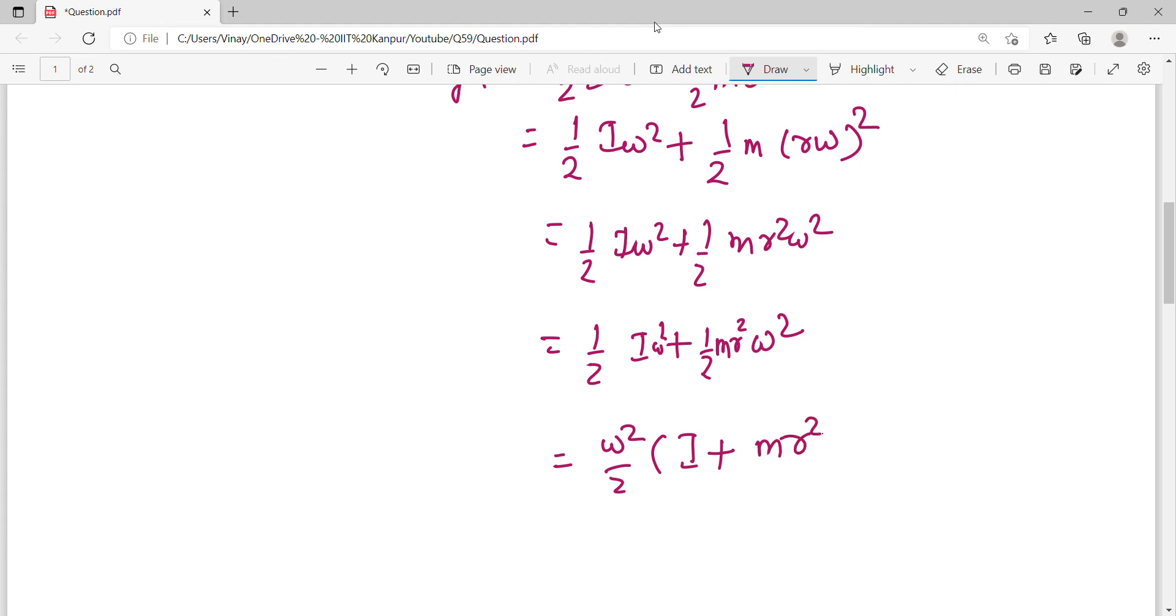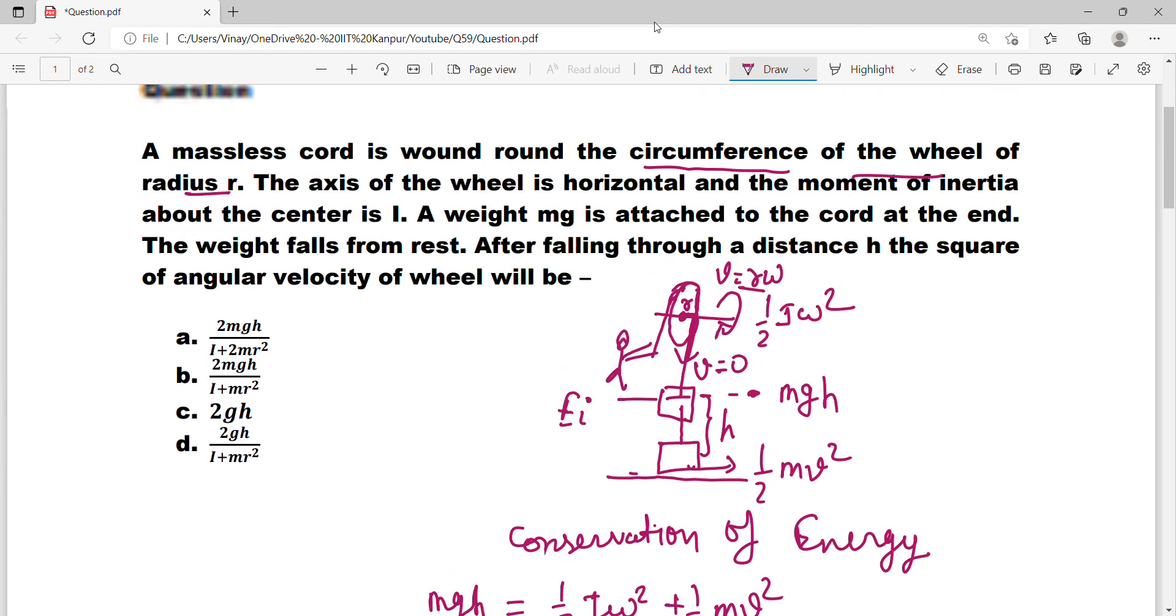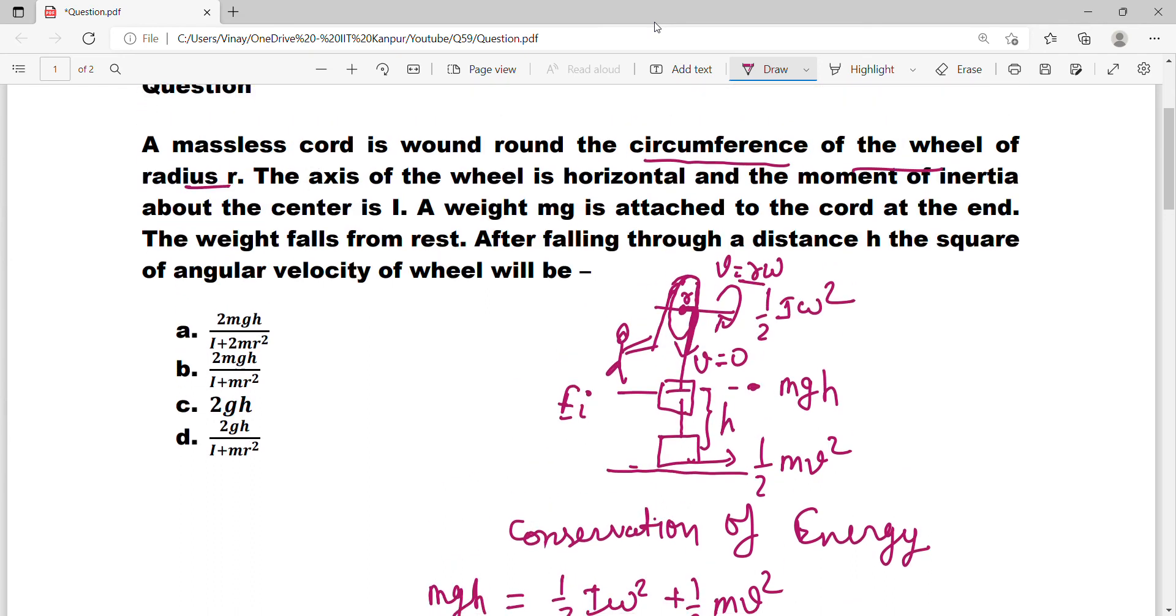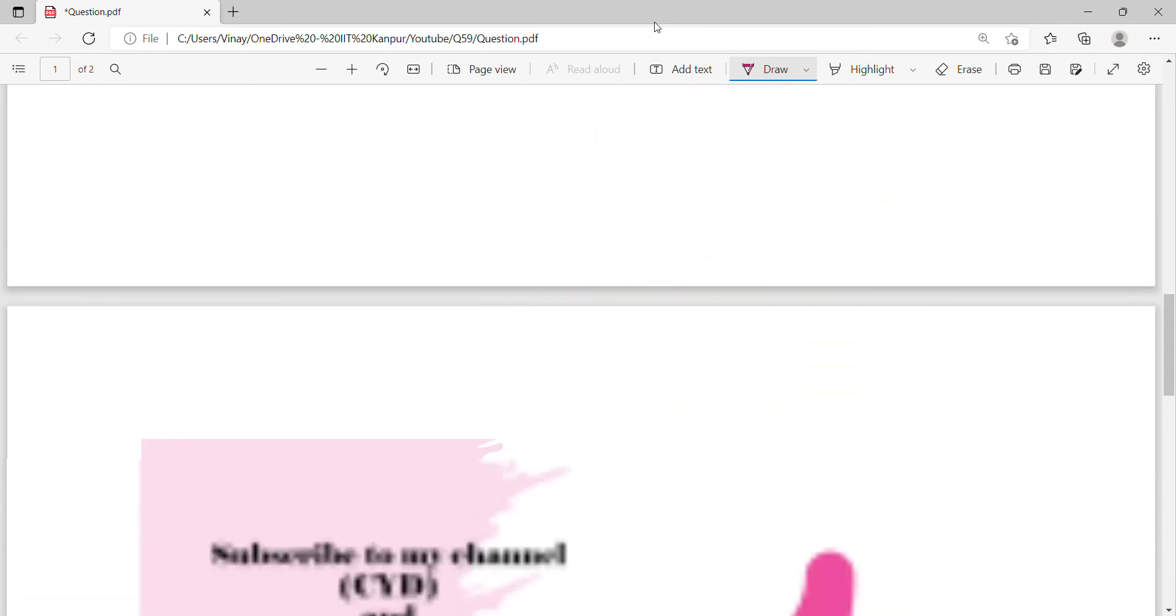Now take omega squared by 2 common. You get I plus mr squared equals mgh. So omega squared equals 2mgh upon I plus mr squared. So which option is true? 2mgh upon I plus mr squared, second option. I plus mr squared, right.